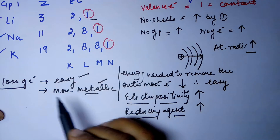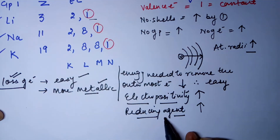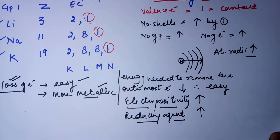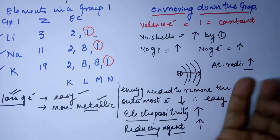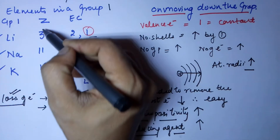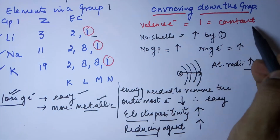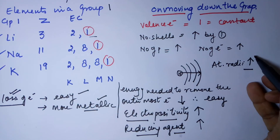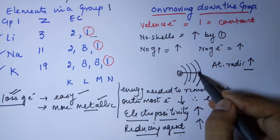To recap: if you know about metallic character, which is nothing but loss of electrons, then you also know about electropositivity and the reducing agent. These are the elements of Group 1 - the alkali group - sodium, lithium, and potassium. You can see the size is increasing. Valence electrons never change down the group. Number of shells always increases by 1. Protons and electrons increase rapidly, but the atomic radius increases because the last shell electron is added to a new shell.